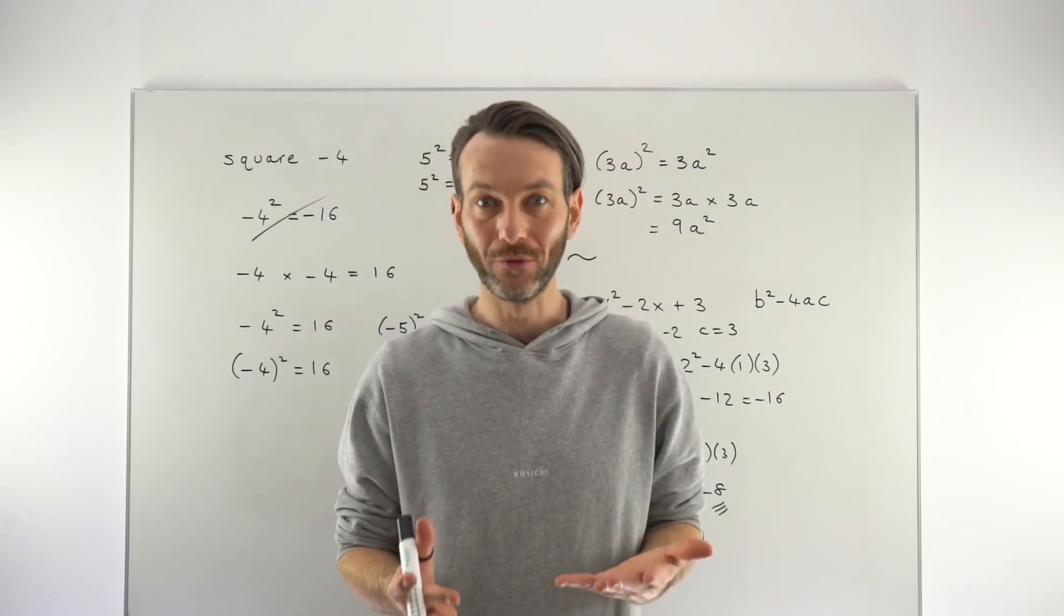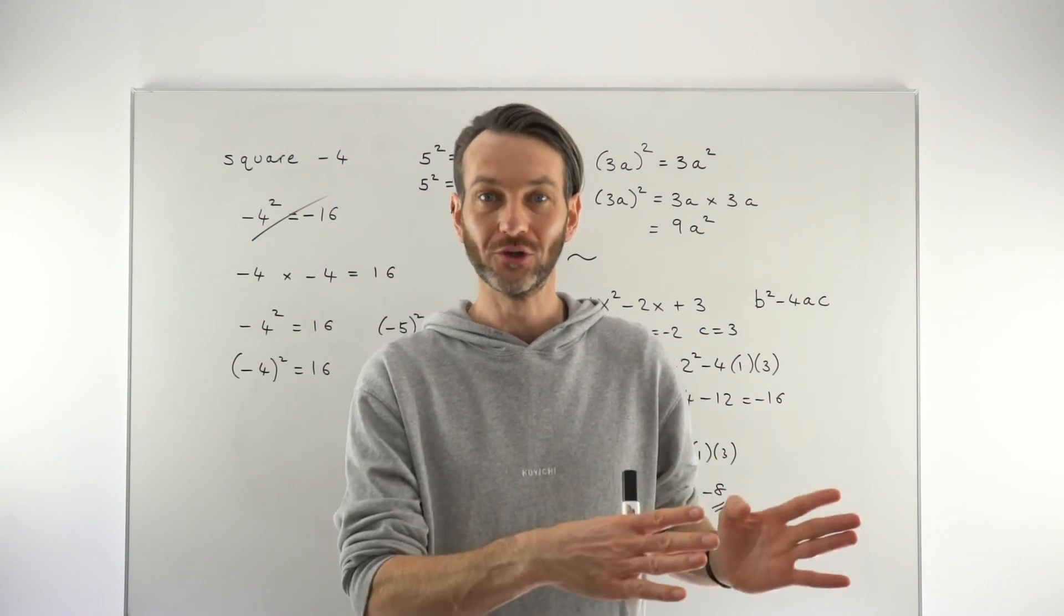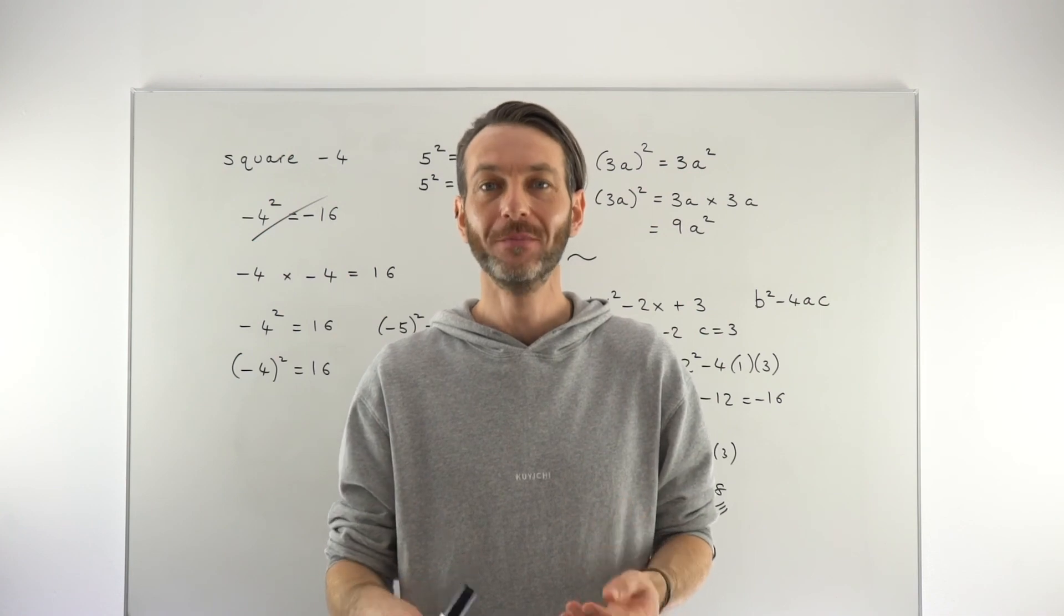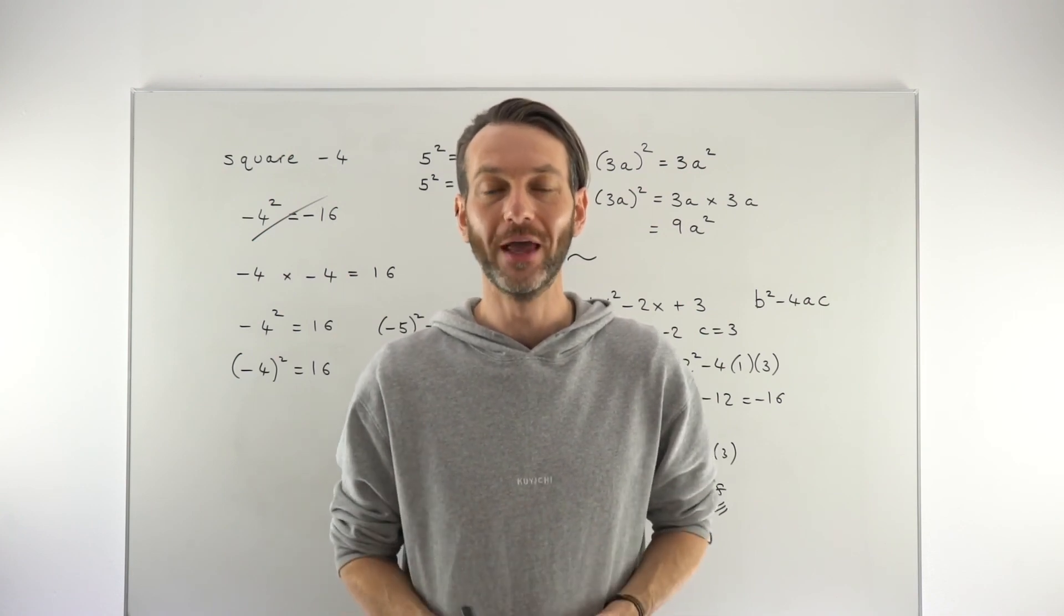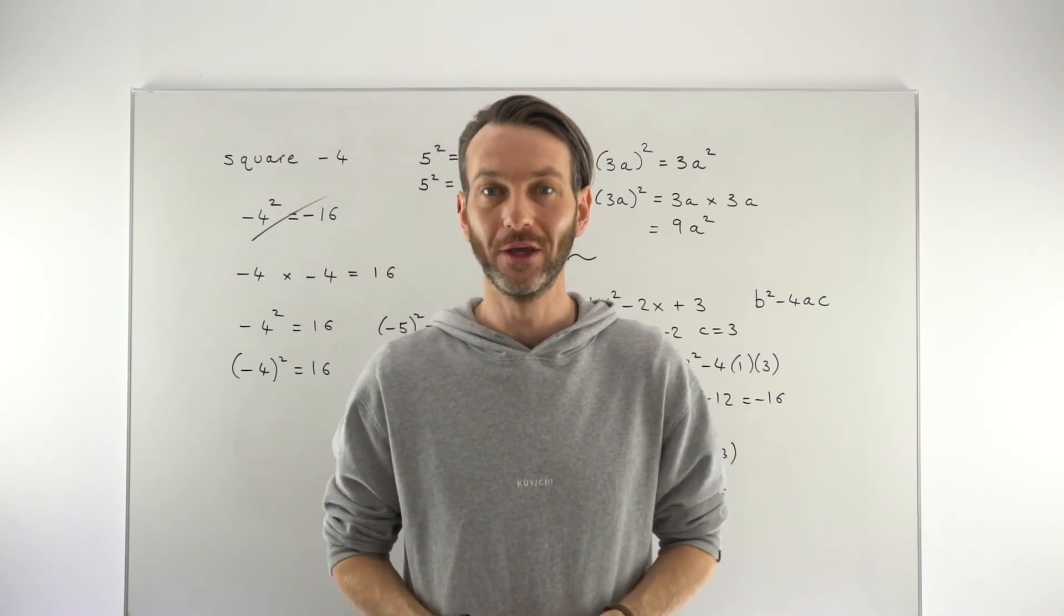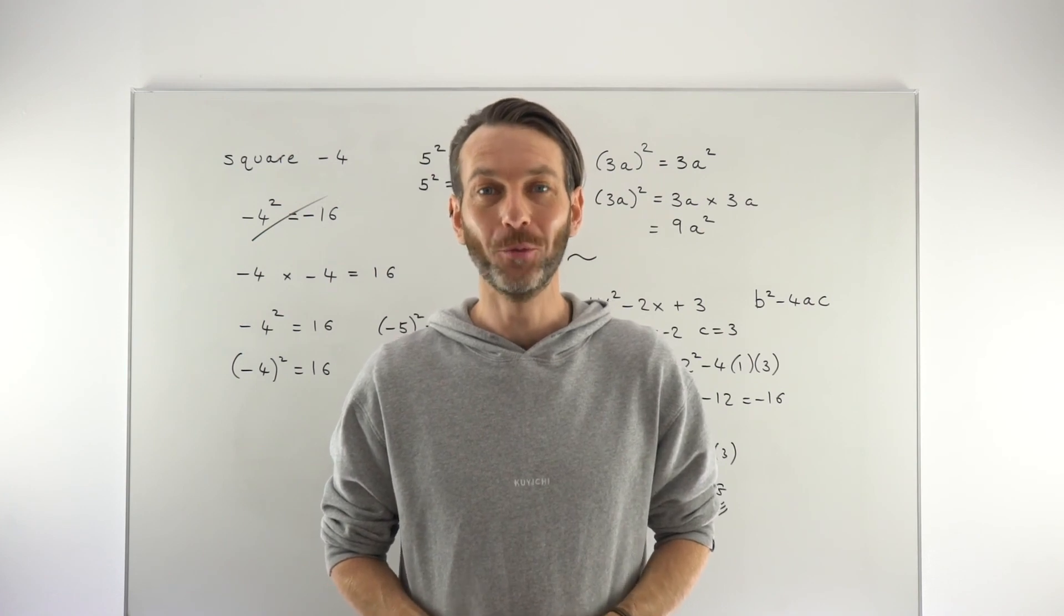So I think the best takeaway maybe from this is, first of all, to know that a negative number always squares to a positive. But secondly, just to keep in mind that when you square anything, you're multiplying the thing to itself. And that's where the double negative leading to that positive final answer actually comes from. So just be careful with that, and I hope that is helpful.